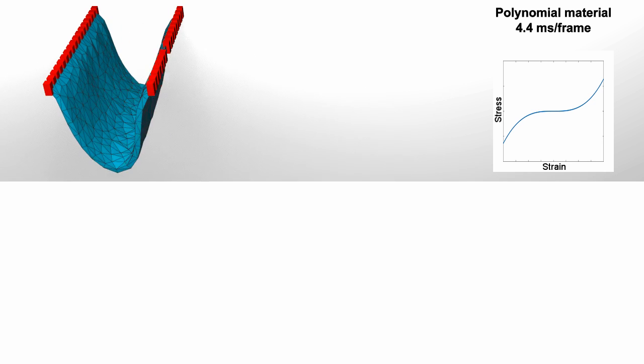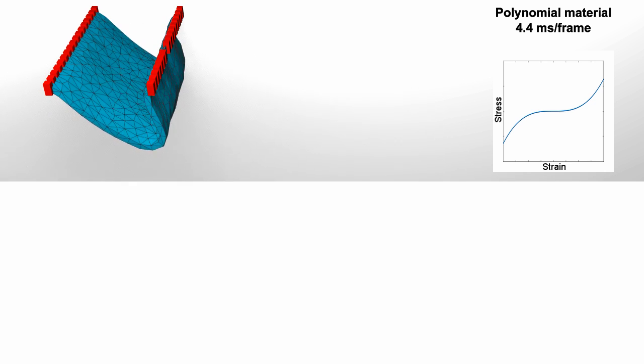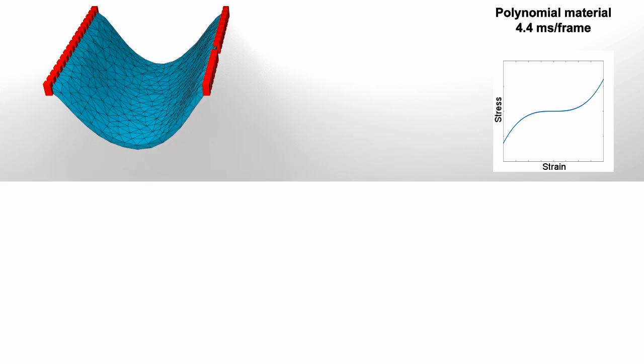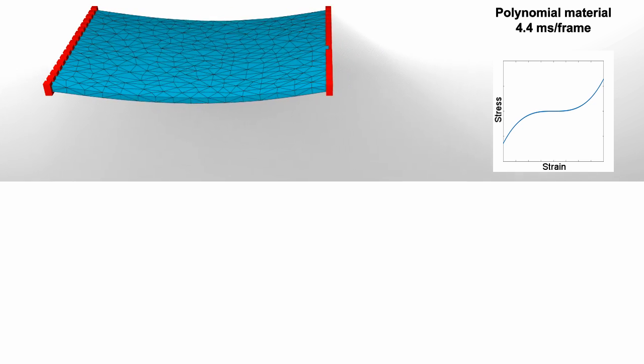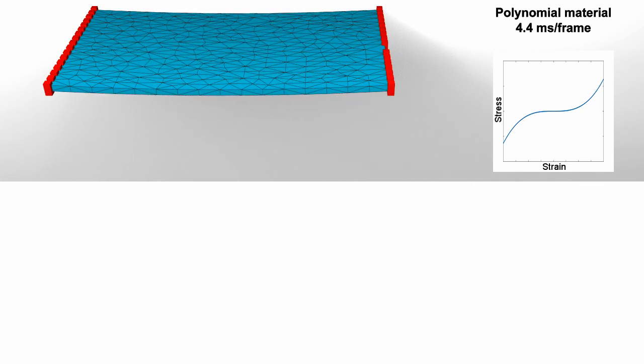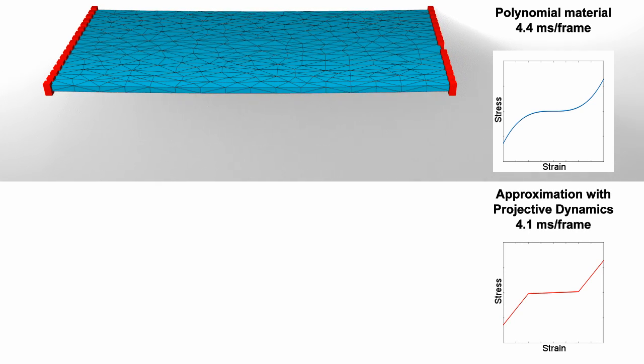Here we see our method applied to a polynomial material. This material can be approximated by projective dynamics using two constraints, which create a piecewise linear approximation. Unfortunately, this approximation introduces artifacts.